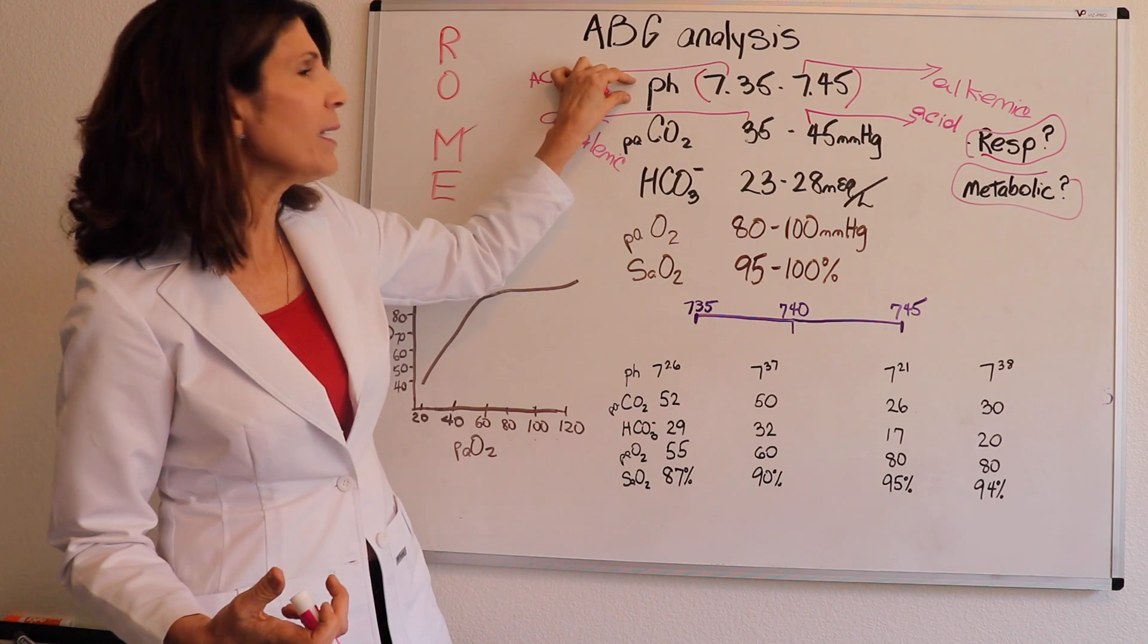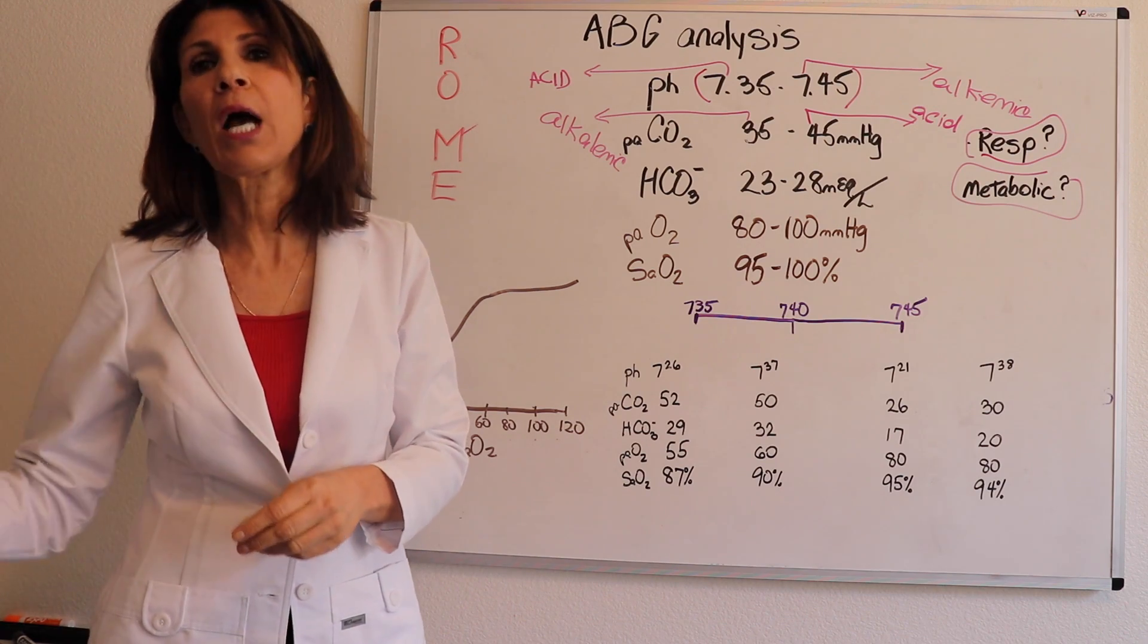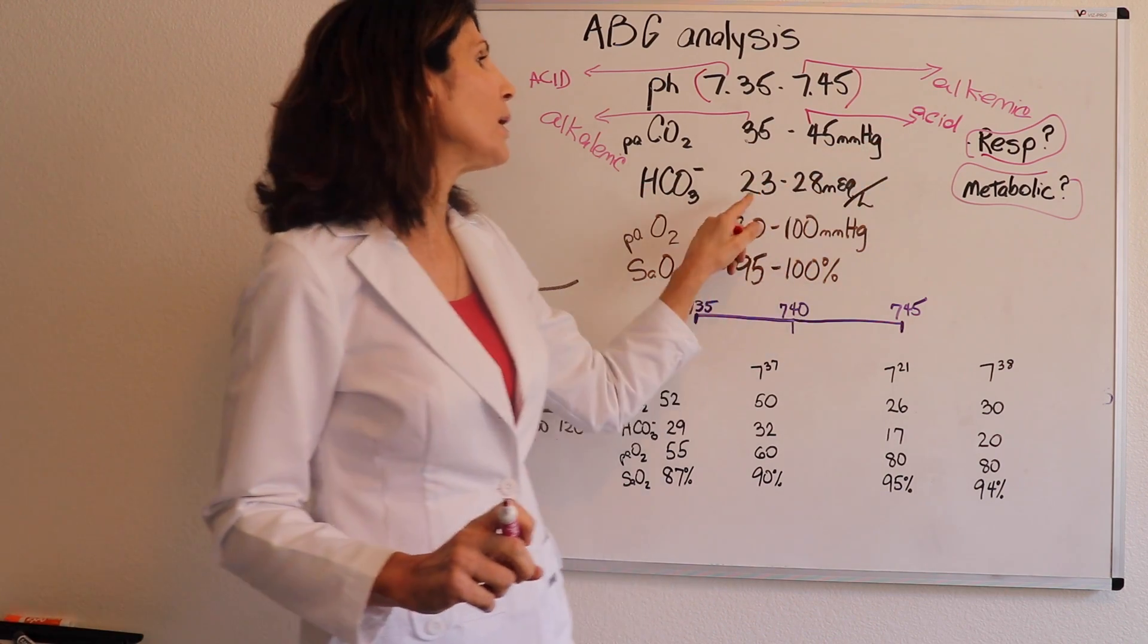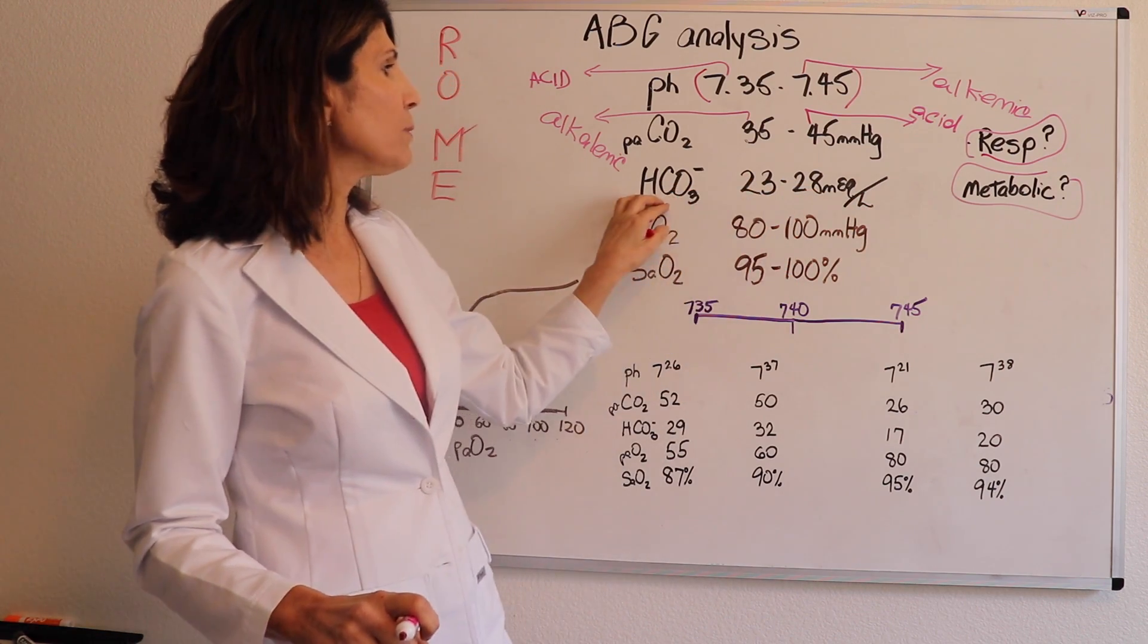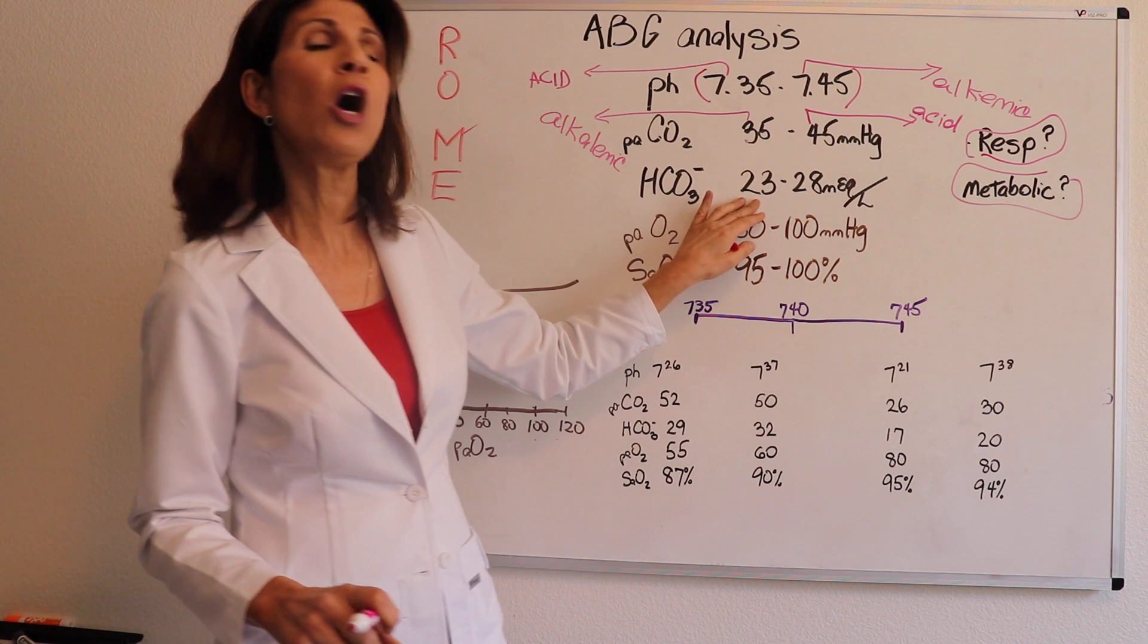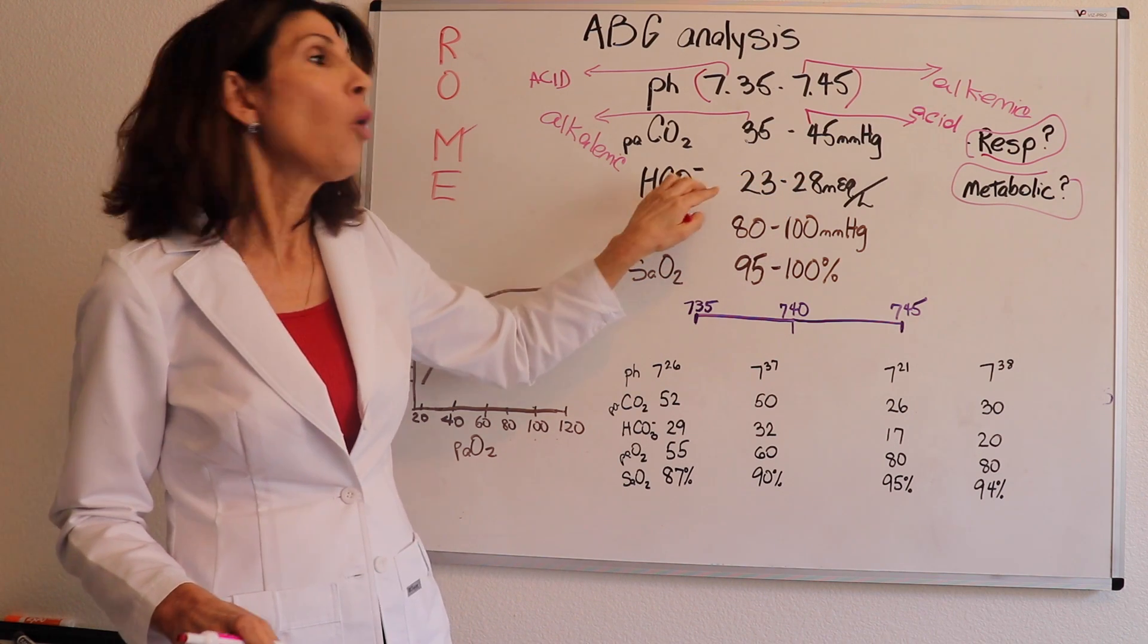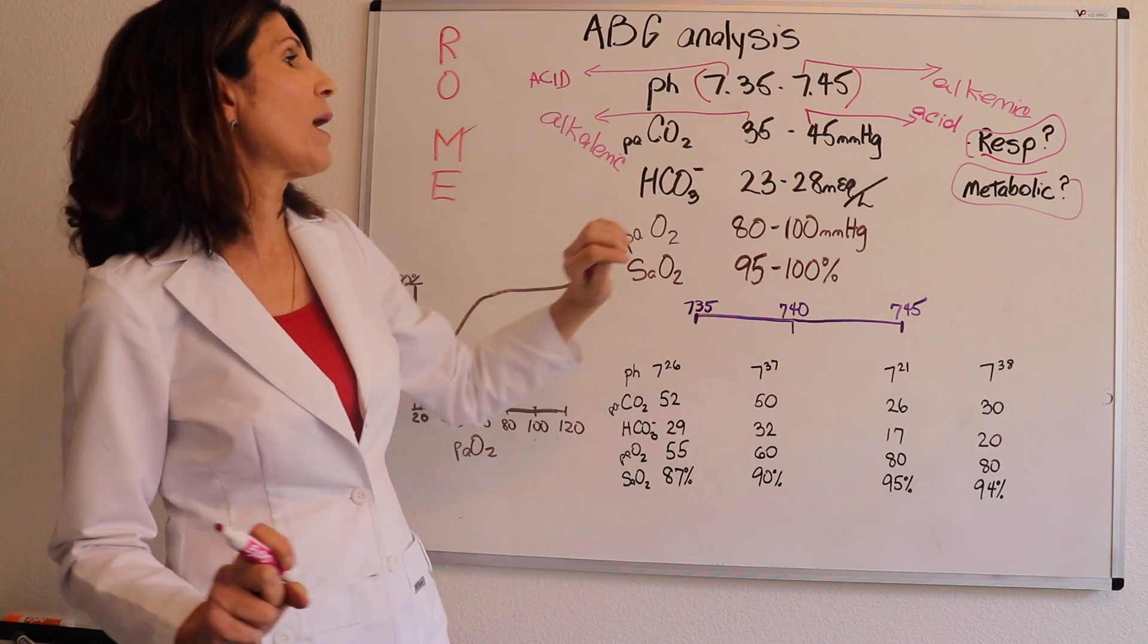So again, when you're looking at the pH, we want to see which one caused it, the other one's going to compensate for. So we're going to get to compensation. Back to bicarb. Normal, it's not a partial pressure like CO2 was. It's in milliequivalents per liter. So we just label it differently. Normal values of this base or bicarbonate is 23 to 28 milliequivalents per liter. So we know that when our patient's value deviates from this, that there is either a primary metabolic imbalance or it's compensating for a primary respiratory imbalance.